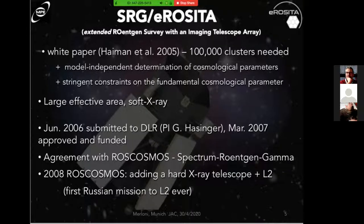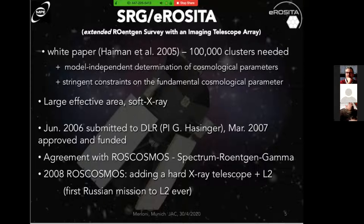In order to detect 100,000 clusters, you can relatively simply calculate the required sensitivity given what we know about number density evolution as a function of flux. People designed the telescope in 2006 — the PI at the time was Günter Hasinger from MPE. They submitted a proposal to the German space agency in 2006, which was funded in 2007 to build the telescope sensitive enough to detect 100,000 clusters. This was then consolidated by an interagency agreement between the German and Russian space agencies, Roscosmos — and this was the birth of the current Spectrum Röntgen-Gamma, or SRG, mission.